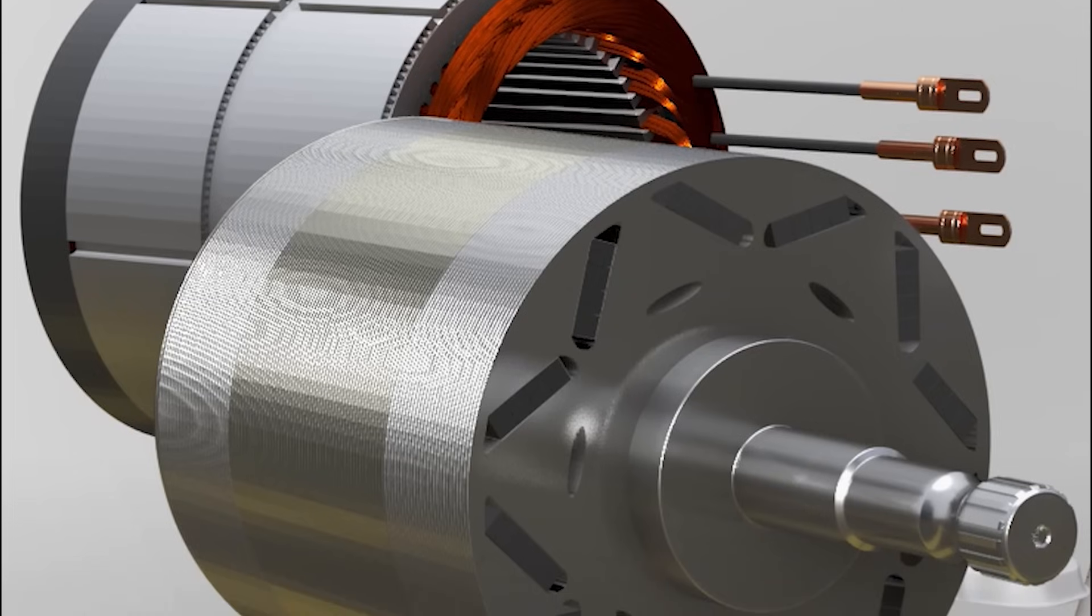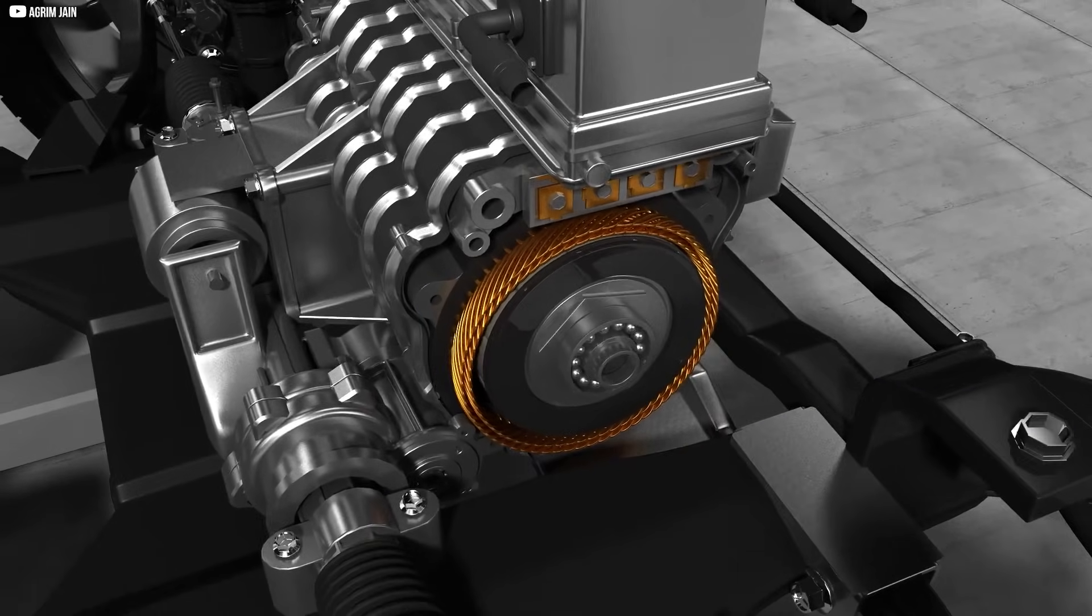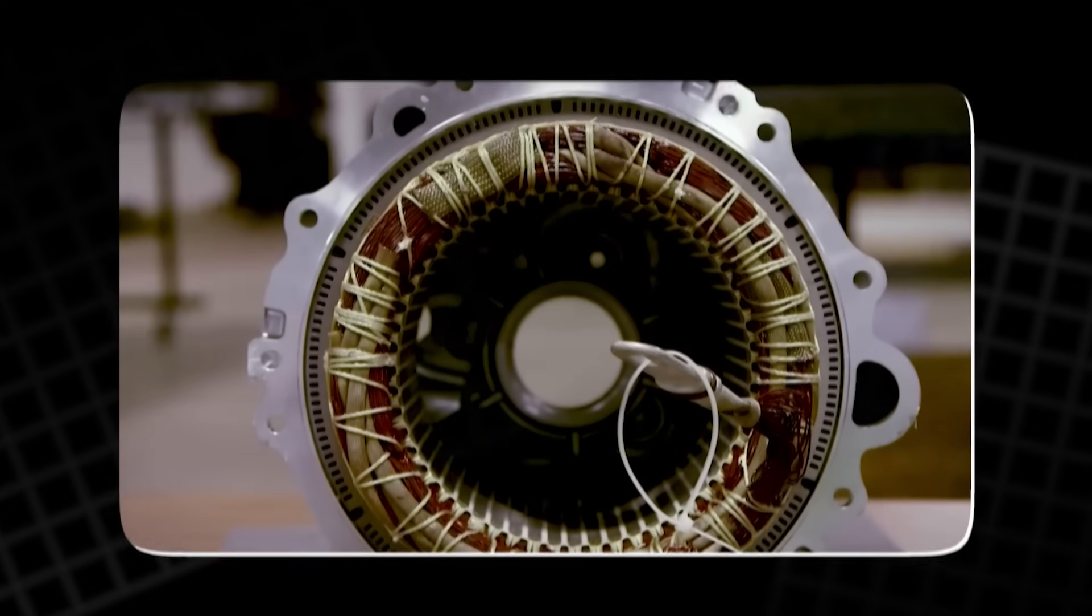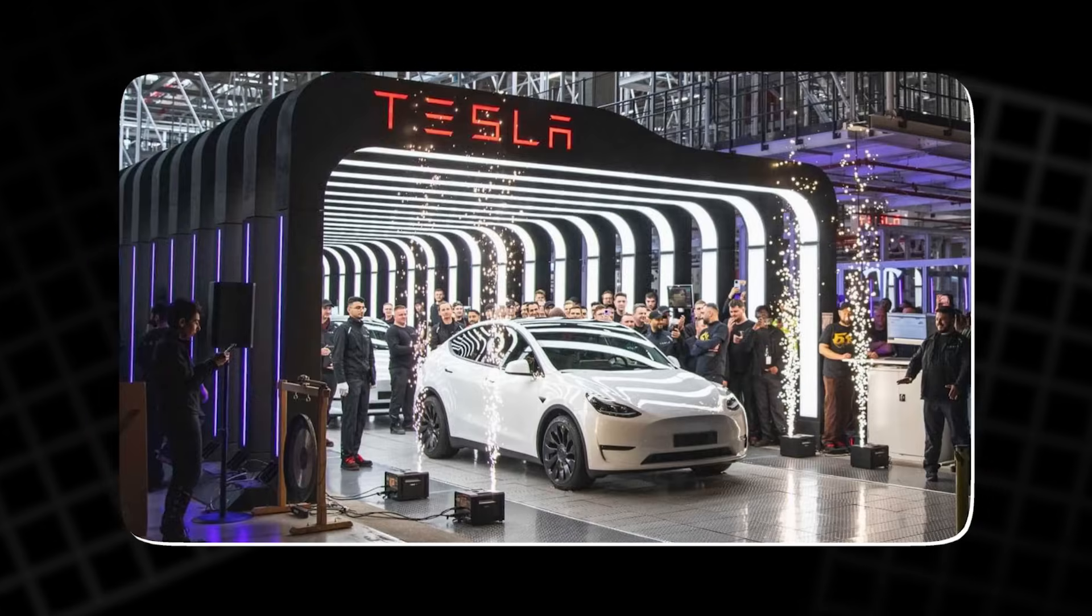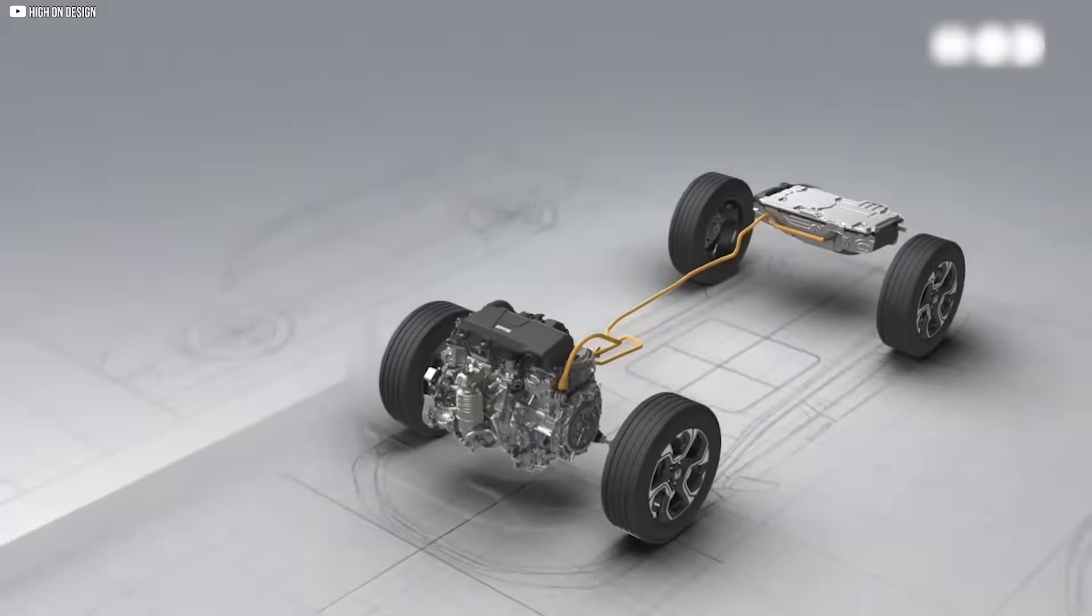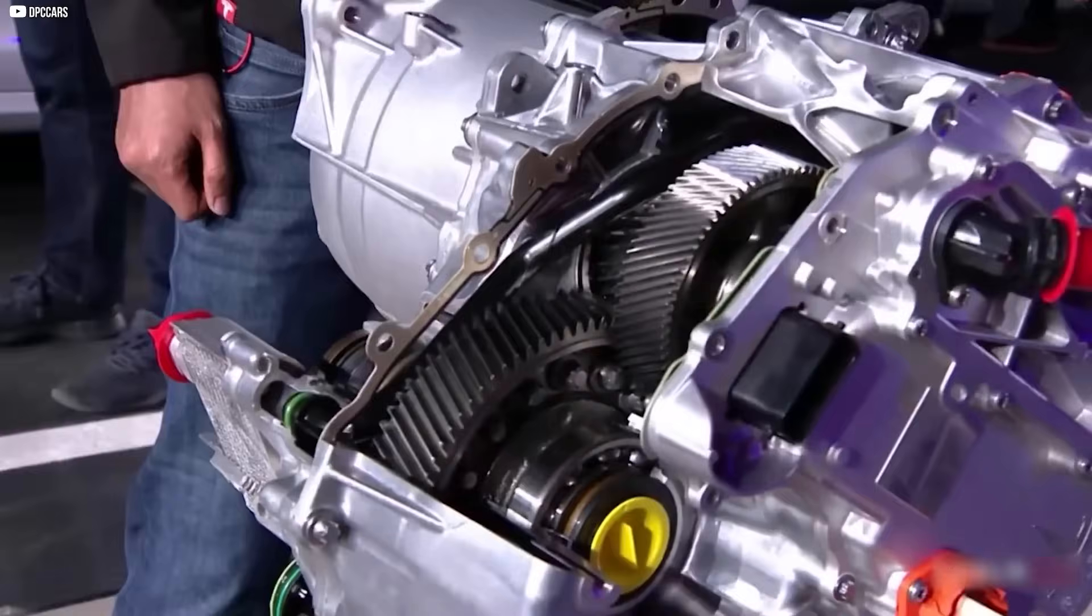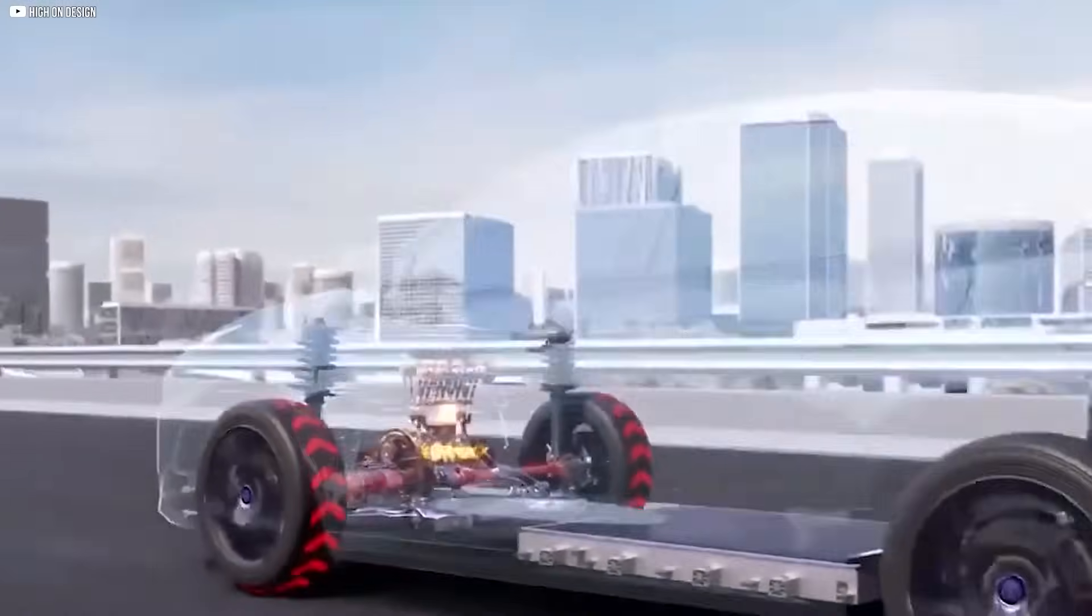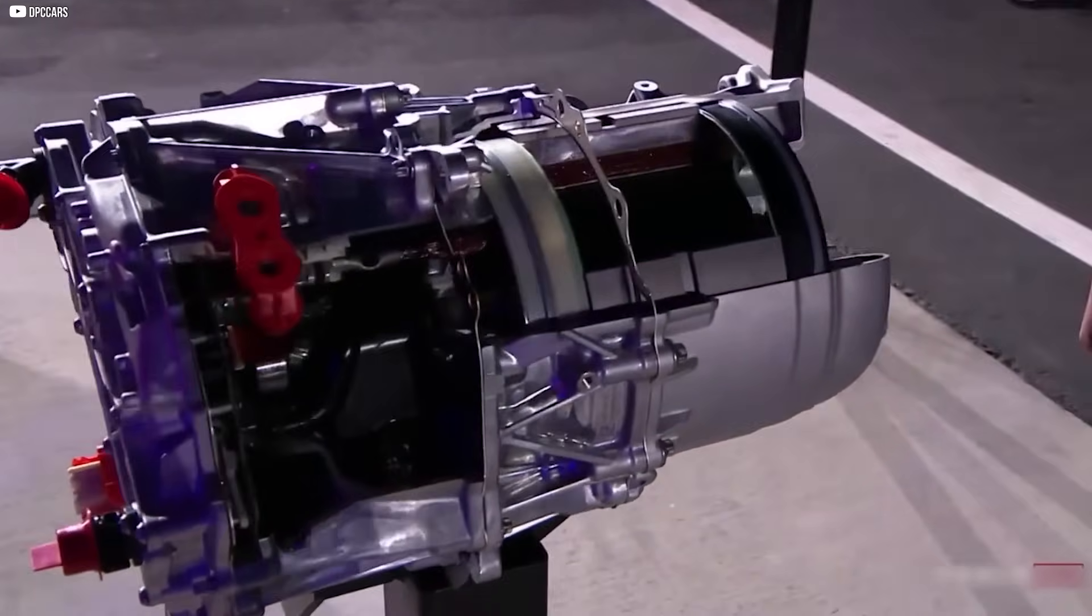There was another issue too – heat. The powerful magnets inside the rotor weren't immune to physical stress. As the motor spun faster, electrical eddy currents swirled inside the metal parts of the magnets, creating unwanted heat. Over time, this raised the risk of the magnets weakening or even demagnetizing completely. Tesla engineers found themselves stuck. They had a motor that was great for low-speed power, but bad for high-speed cruising. And the old induction motors were the exact opposite. It became clear – neither solution was enough on its own.